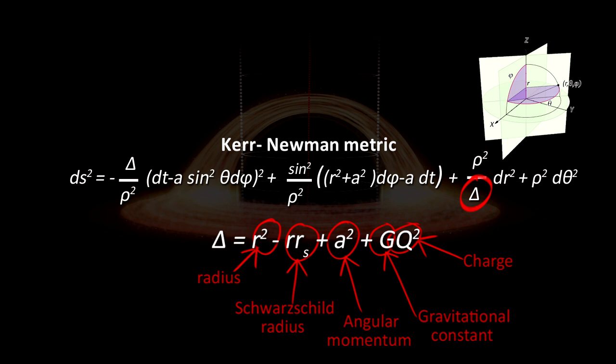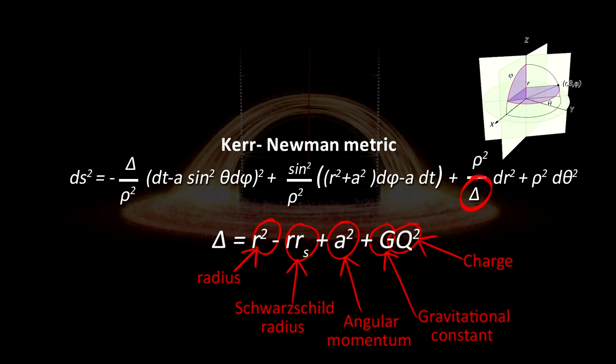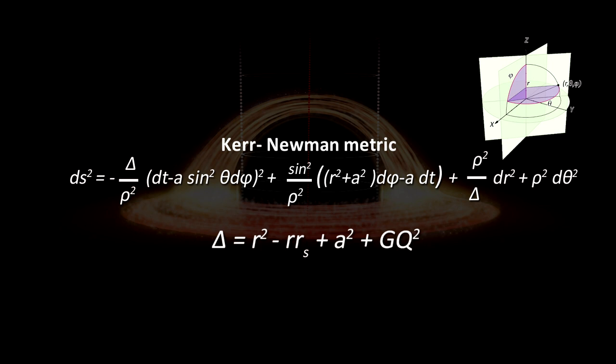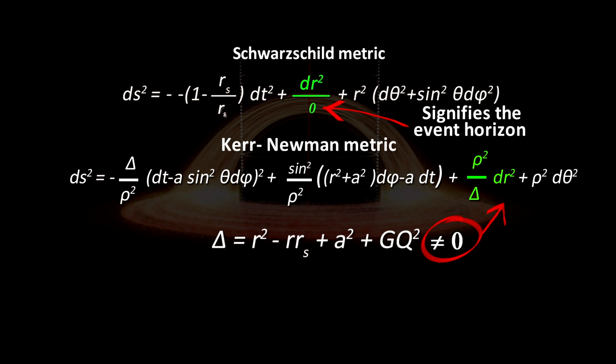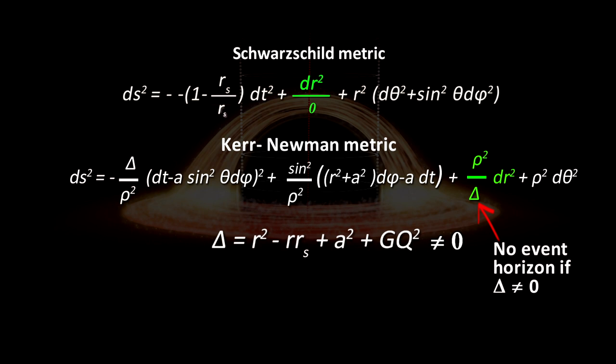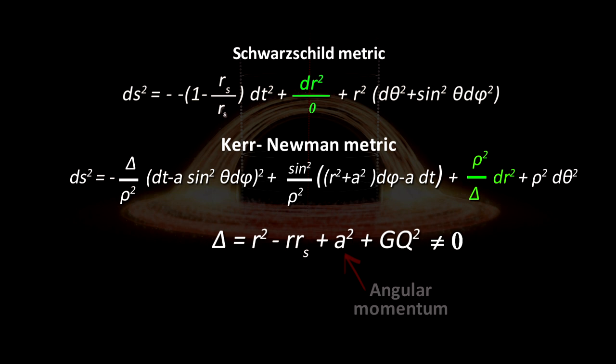There are ways we can remove the event horizon in this metric. What we have to do is to make sure that the delta on the dr squared term does not equal zero, similar to what it does in the Schwarzschild metric, signifying the event horizon. In other words, if we can avoid getting a zero in the dr squared term, there will be no event horizon. It turns out, when you do the math, that if the angular momentum divided by the mass of the black hole times the speed of light is greater than half the Schwarzschild radius, then delta can never equal zero.